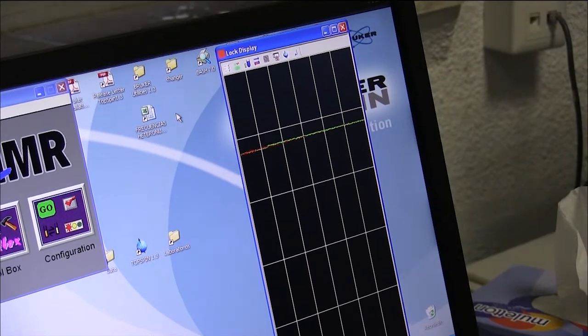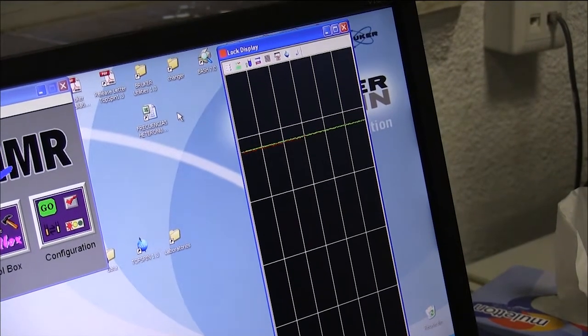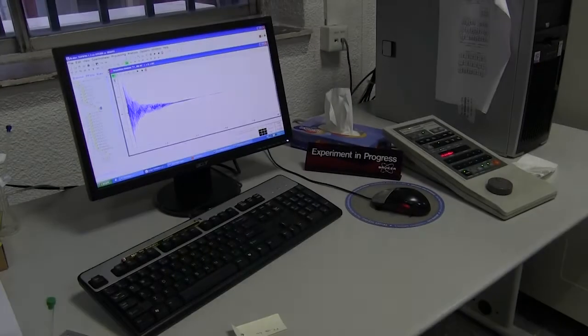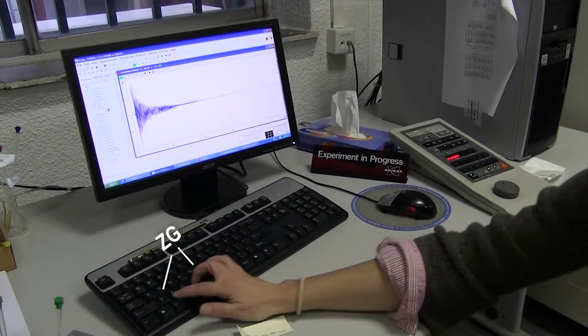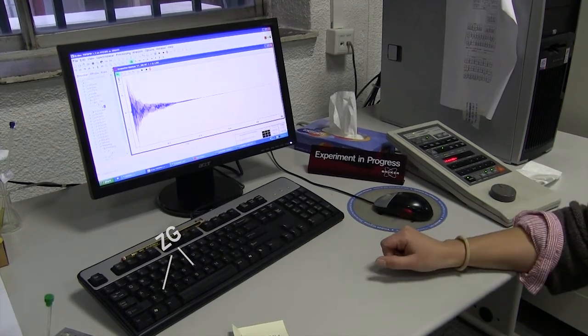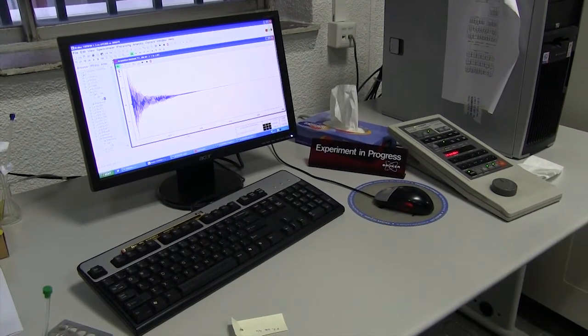The spectrometer is now well set to start acquiring the necessary electronic data from the sample. With a few keystrokes at the keyboard of the computer, the signal starts to be received.